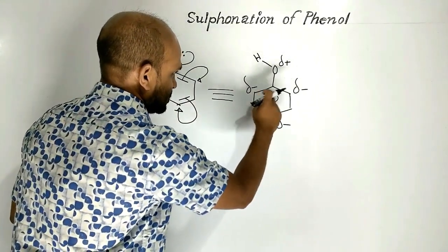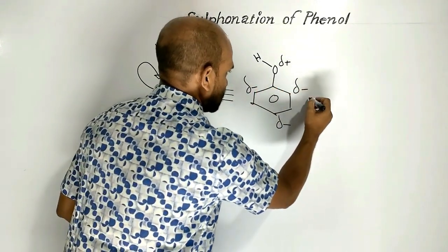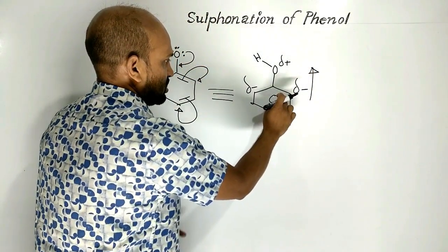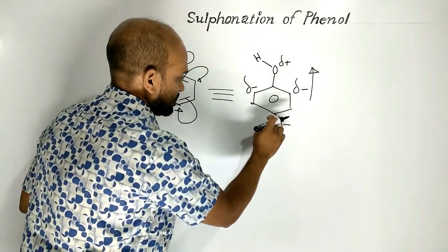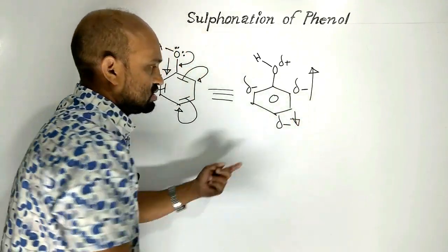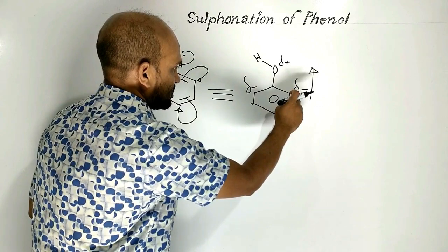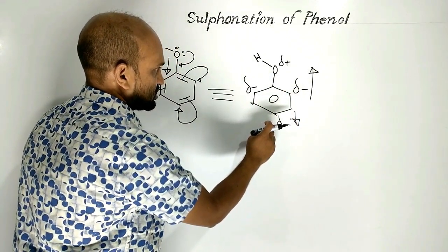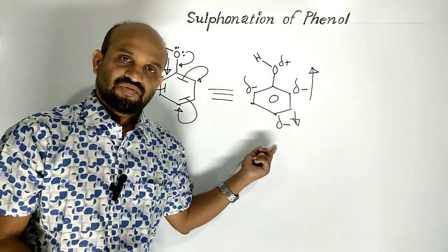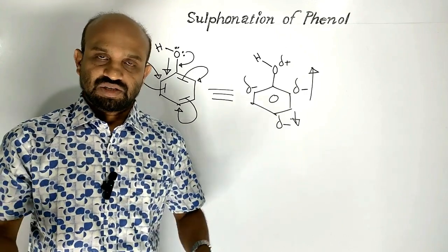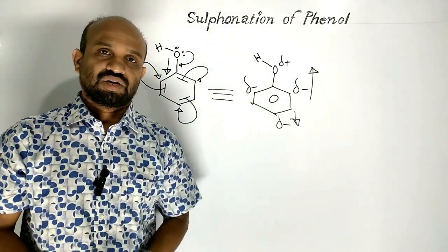Ortho positions are nearer to the electron-donating hydroxyl group. That is why ortho positions are electronically dense places. But para position is far from the electron-donating hydroxyl group. That is why para position is an electronically thin place. So, ortho position is electronically dense and para position is electronically thin.